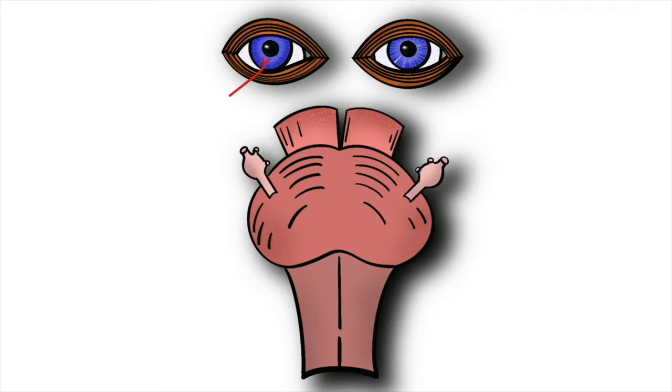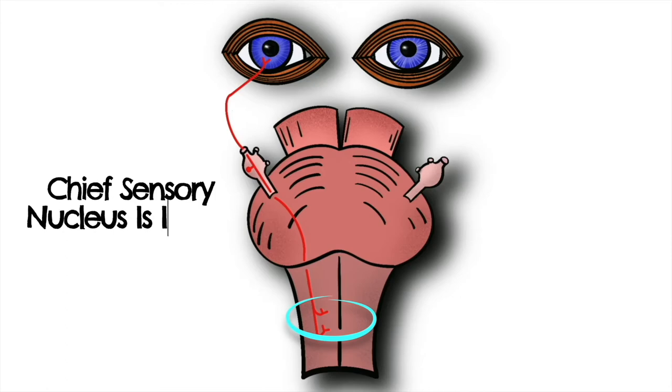Sensory information is transmitted along the ophthalmic branch of the trigeminal nerve and synapses in the medulla of the brainstem in the spinal trigeminal nucleus. Some literature varies on this however, and you may see in some textbooks the trigeminal nerve synapsing in the chief sensory nucleus.